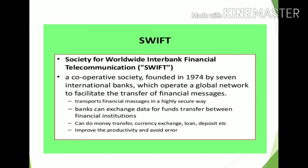SWIFT is one cooperative society operating worldwide, founded in 1974 by seven international banks, which operates a global network. SWIFT transfers financial messages between different banks globally — for example, banks in one country can send and receive any financial transaction information to banks in another country through SWIFT. They also provide SWIFT codes to banks for easy access to financial information.